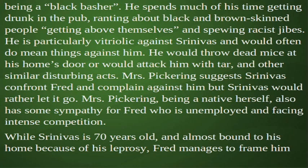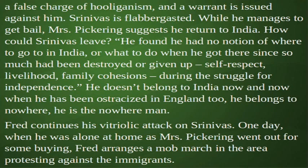He spends much of his time getting drunk in the pub, ranting about black and brown-skinned people getting above themselves and spewing racist jibes. He is particularly vitriolic against Srinivas and would often do mean things against him — throwing dead mice at his home's door or attacking him with tar and other similar disturbing acts. Mrs. Pickering suggests Srinivas confront Fred and complain against him, but Srinivas would rather let it go. Mrs. Pickering, being a native herself, also has some sympathy for Fred, who is unemployed and facing intense competition. While Srinivas is 70 years old and almost bound to his home because of his leprosy, Fred manages to frame him in a false charge of hooliganism and a warrant is issued against him. Srinivas is flabbergasted. While he manages to get bail, Mrs. Pickering suggests he return to India. But Srinivas found he had no notion of where to go in India or what to do when he got there, since so much had been destroyed or given up — self-respect, livelihood, family cohesion — during the struggle for independence. He doesn't belong to India now, and now when he has been ostracized in England too, he belongs to nowhere. He is the nowhere man.